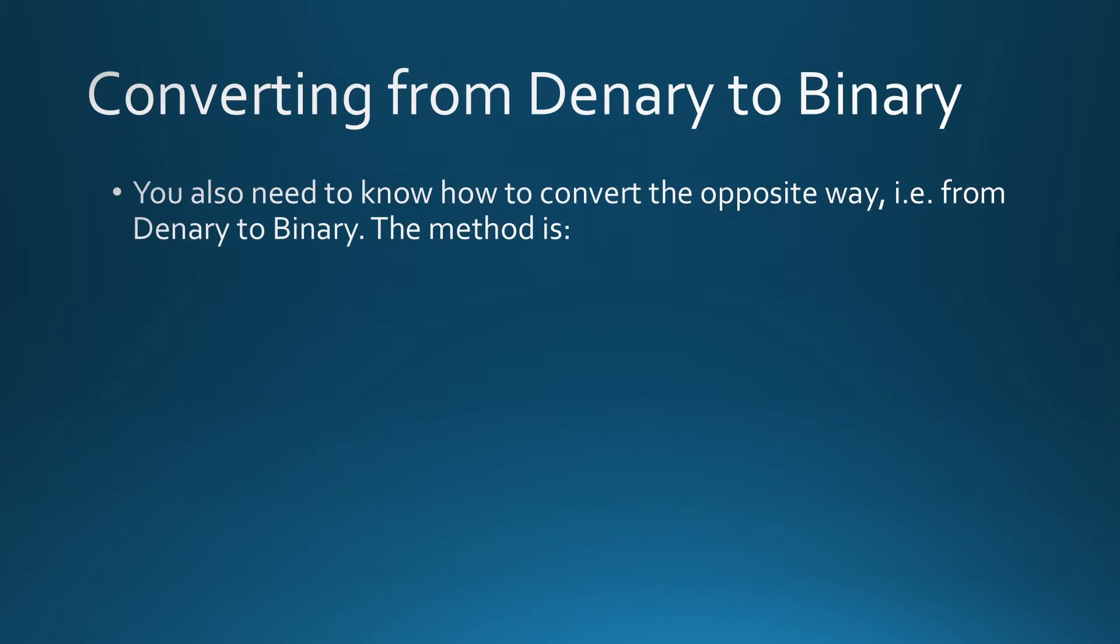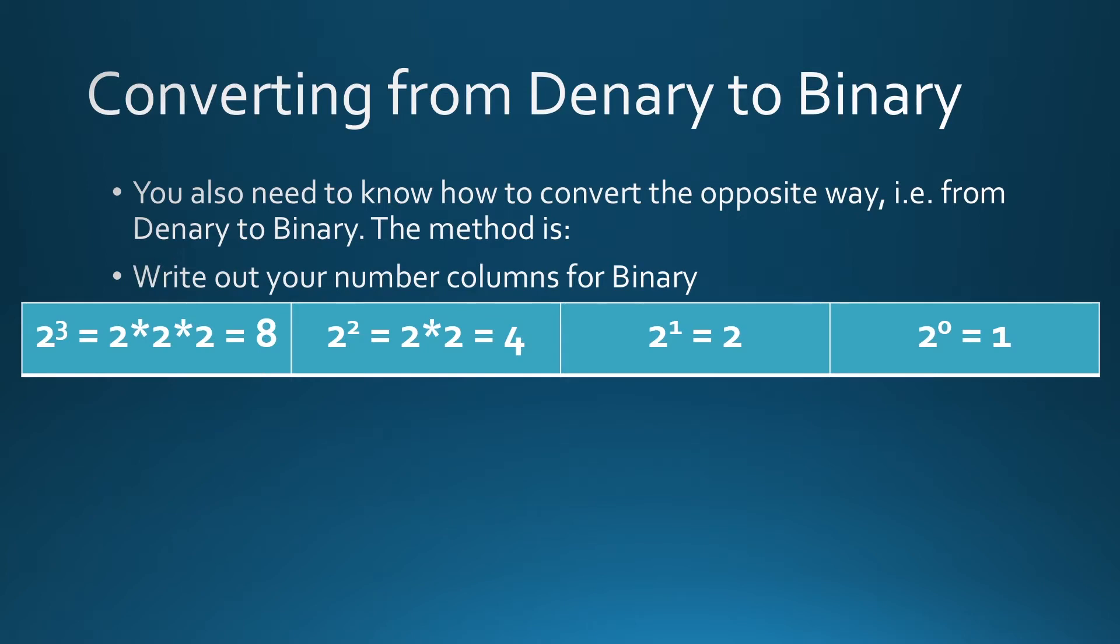So, the opposite way. First of all, write out your columns. When you're going from binary to denary, or denary to binary, always write out your columns. Remember, the right-hand most column is the number base you're in to the power of 0, which will always be the 1s.